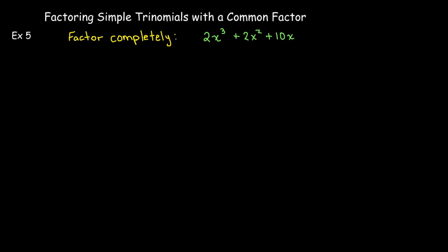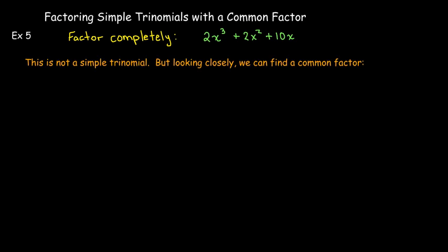Let's look at another one which is not a simple trinomial. There is a common factor, which is 2x. What's left over is the simple trinomial x² + x + 5. We would need to find two numbers which multiply to make positive 5 and add to make positive 1 — because plus x is the same as plus 1x.